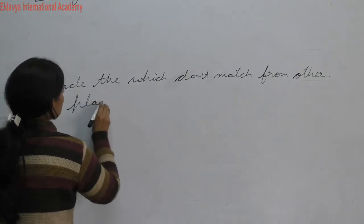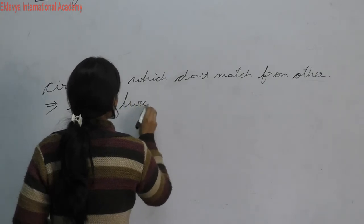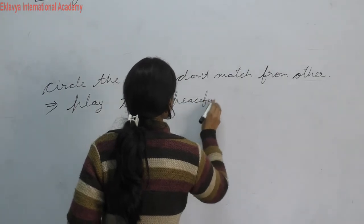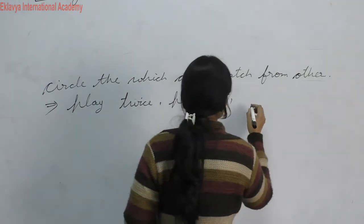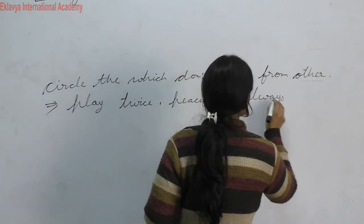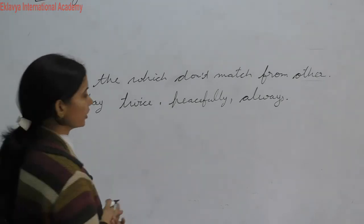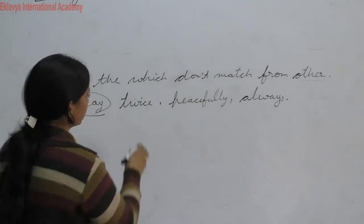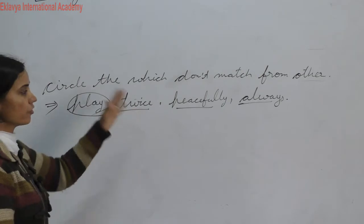For example: play, twice, peacefully, and always. Students, you know very well which one is not an adverb. Play is a verb, while twice, peacefully, and always are adverbs. So play is the word that is different from the others — you circle it.